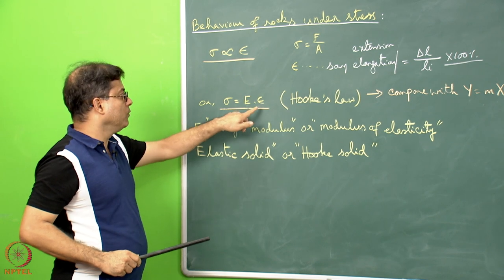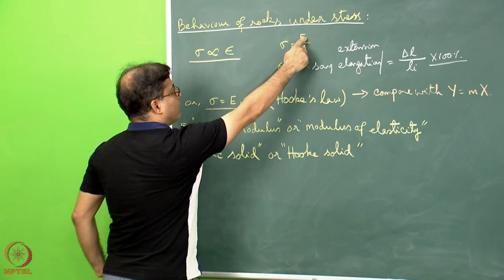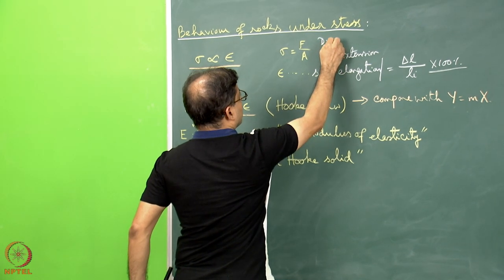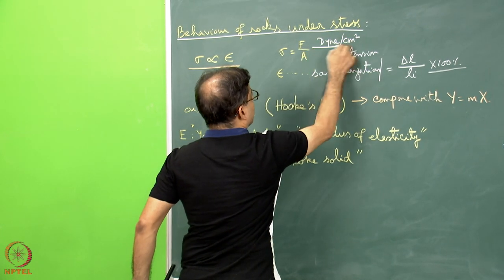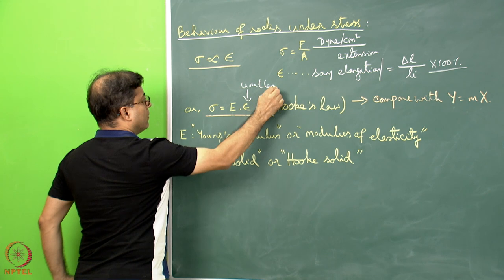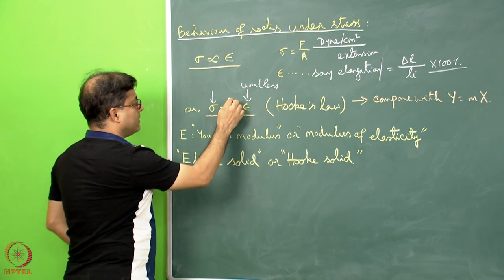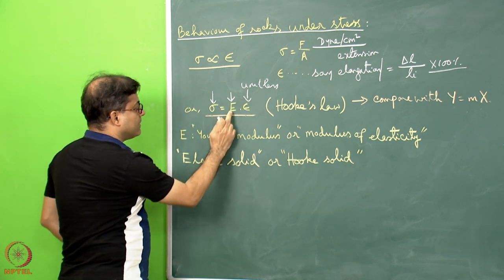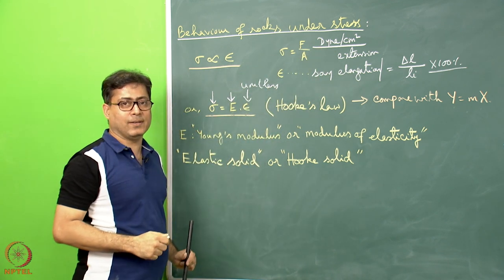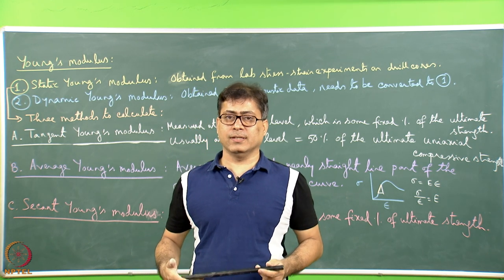Regarding units: strain is dimensionless, and stress has a unit — in CGS it can be dyne per centimeter square. Therefore, Young's modulus E has the same unit as stress, so in CGS it is dyne per centimeter square. Let us now look at different kinds of Young's modulus in materials or rocks.